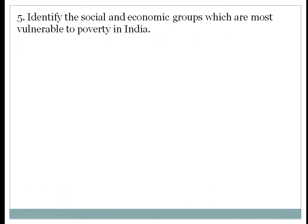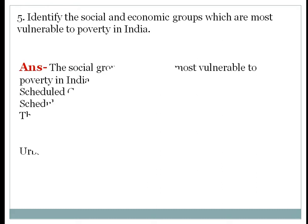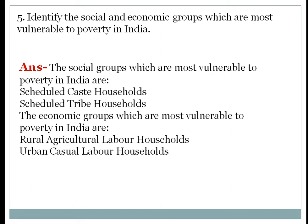Question number 5: Identify the social and economic groups most vulnerable to poverty in India. The social groups most vulnerable to poverty are Scheduled Castes and Scheduled Tribes. The economic groups most vulnerable to poverty are rural agricultural labor households and urban casual labor households.